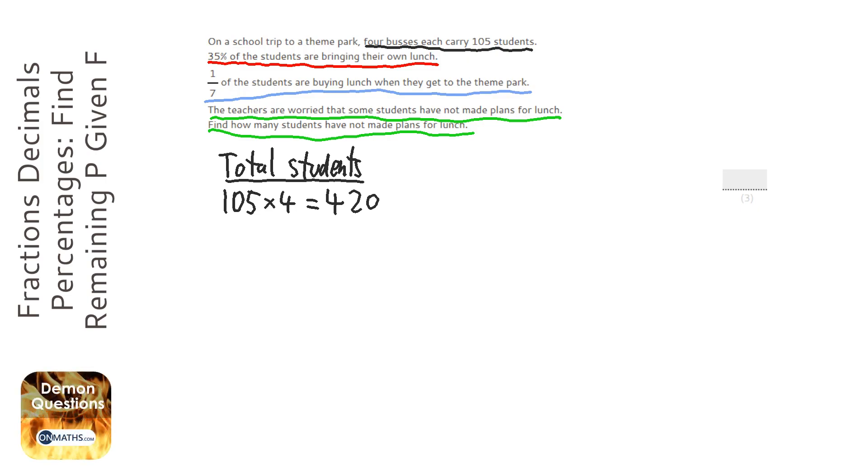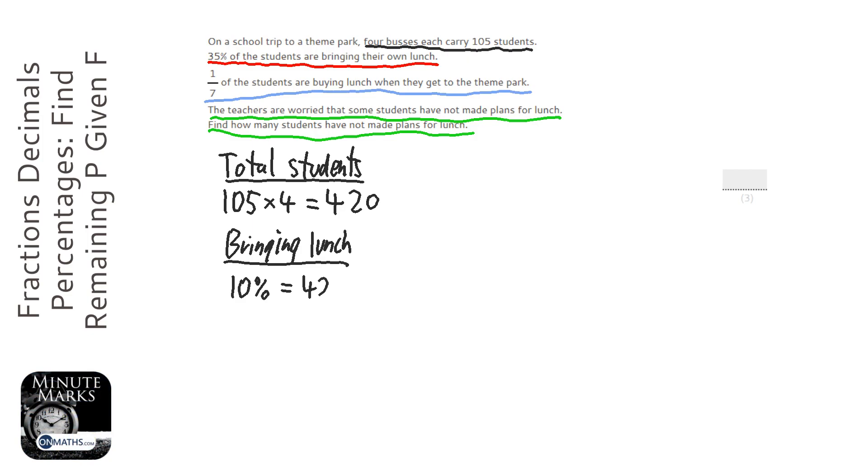Next we need to work out how many are bringing their own lunch. To do this, we're going to work out 10% first, which is going to be 42, because if 100% is 420, that's how many students we have, 10% is you just divide it by 10. And next we can work out 5%, which is going to be half of that, so it's just going to be 21.